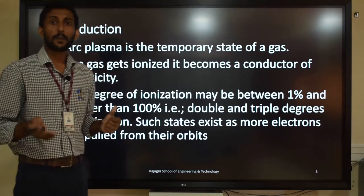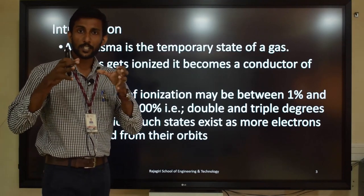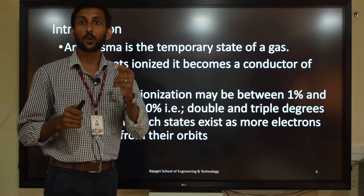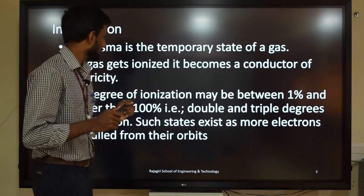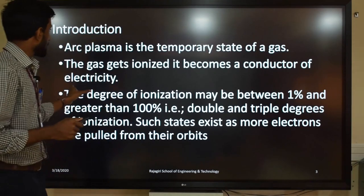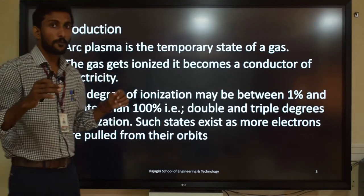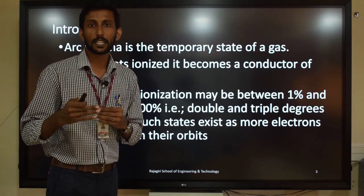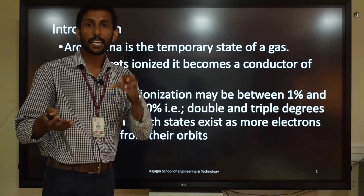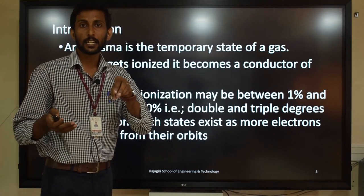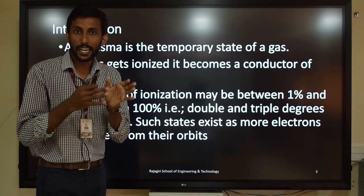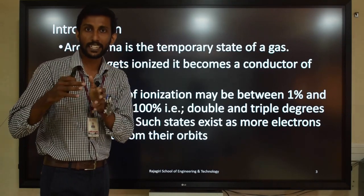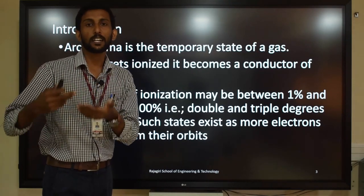The plasma state can be used for metal cutting, metal spraying, and welding. When we are trying to make plasma, we use electricity to convert a compressed gas or a normal gas into plasma.